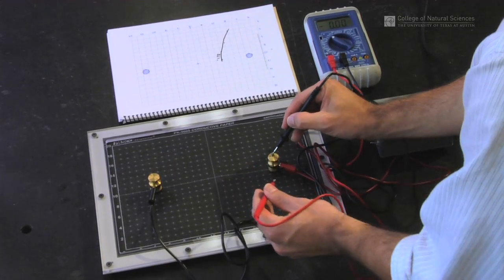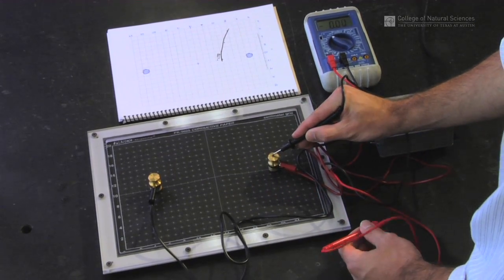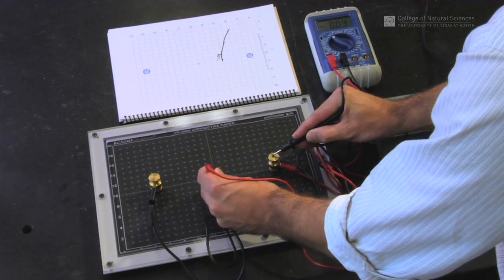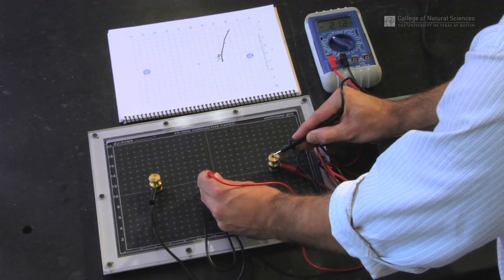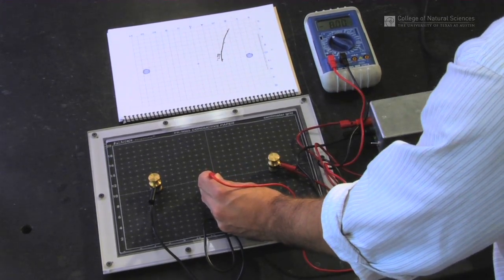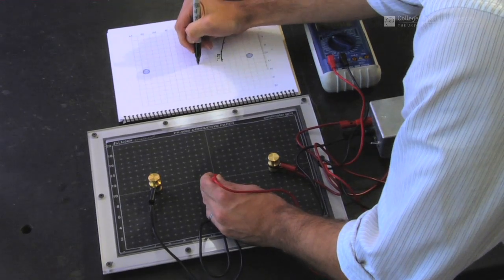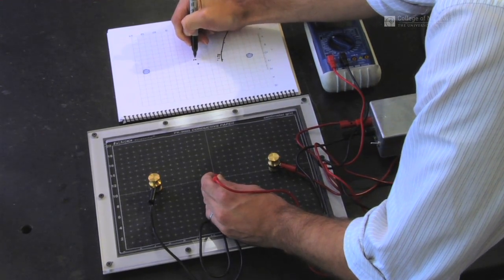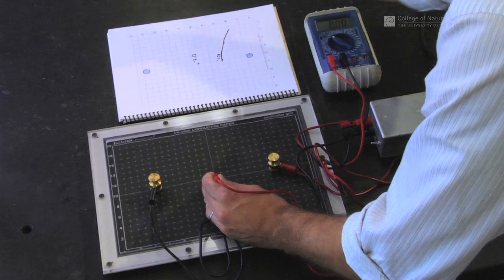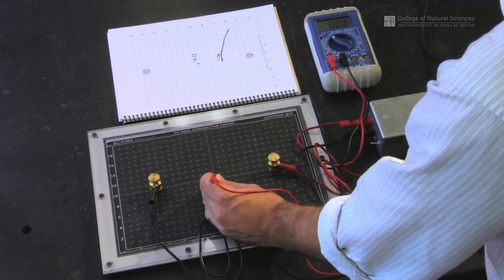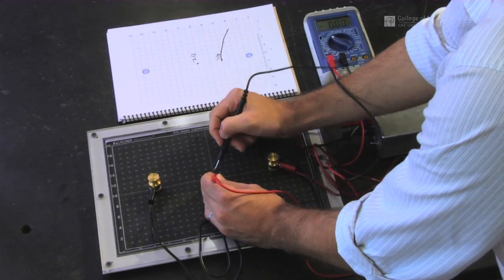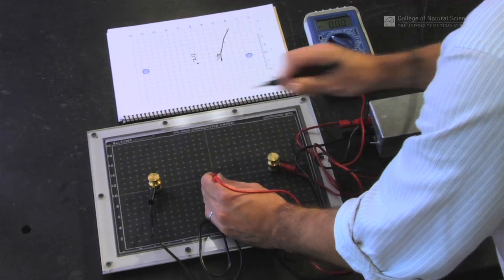Once I get done with that, put the one probe back on the spot, move to a new location, say in the very center. Write down that the very center point was 2.12 volts and continue along the line.